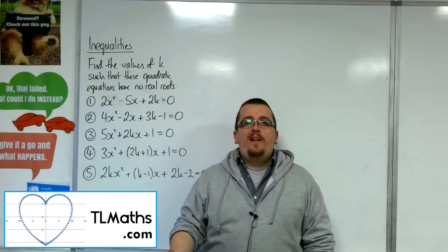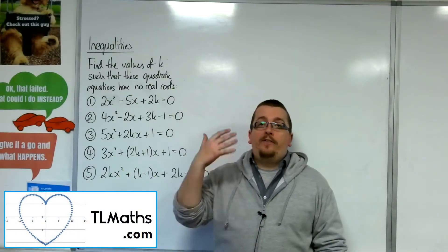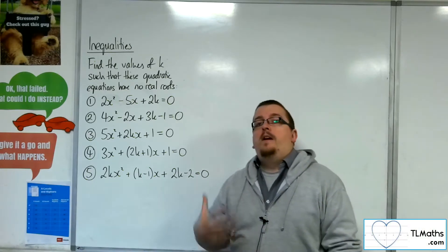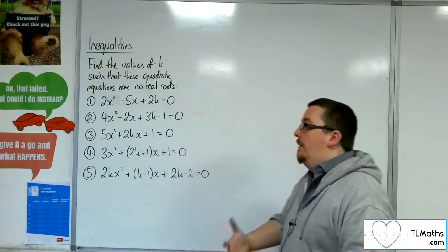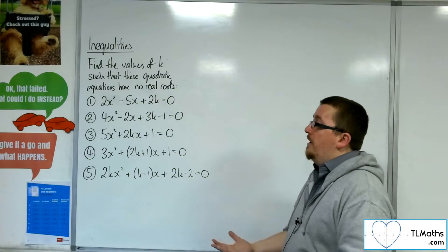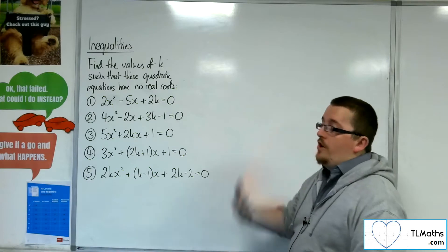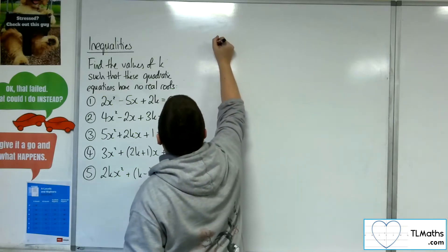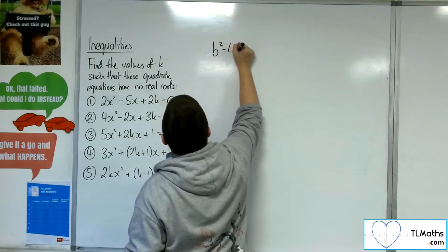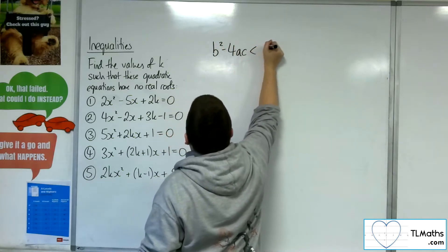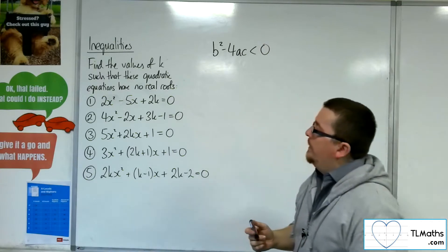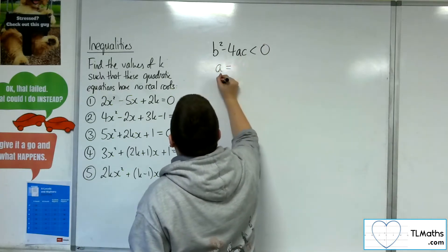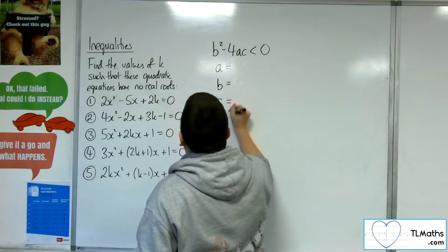In the previous video, we looked at quadratic equations having two distinct real roots. In this video, we're going to look at five more examples, but this time we've got no real roots. So in each of these cases — and you'd want to make this very clear on your exam paper — the discriminant would have to be negative. And for each of these, we want to identify the A, the B, and the C.